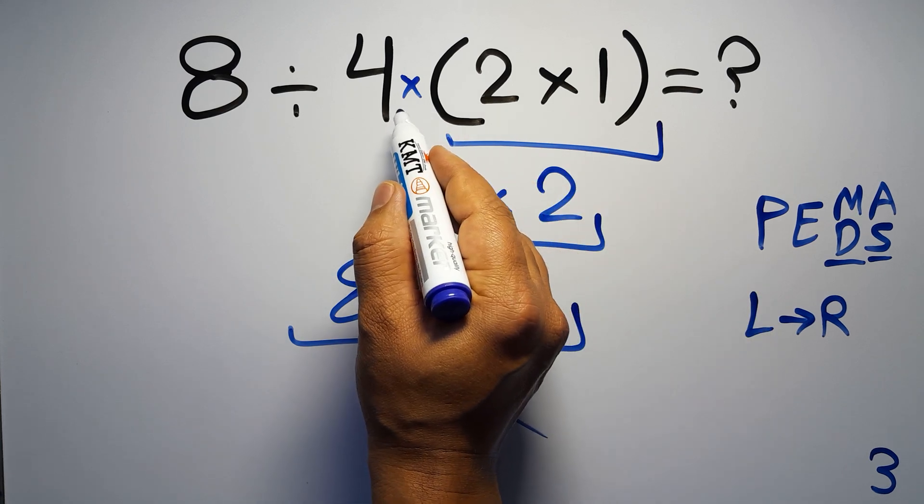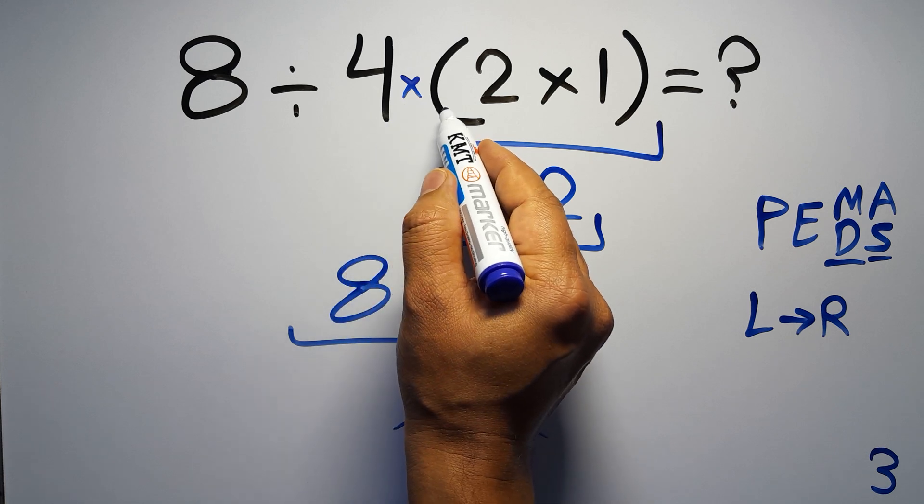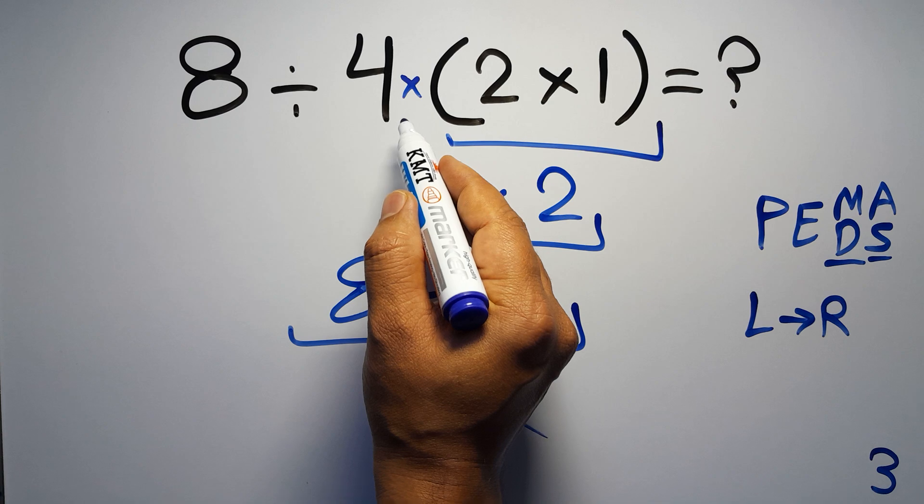Here we have a multiplication, because in mathematics, when a number is placed next to parentheses, it means multiplication, and we usually don't write a multiplication sign for brevity.